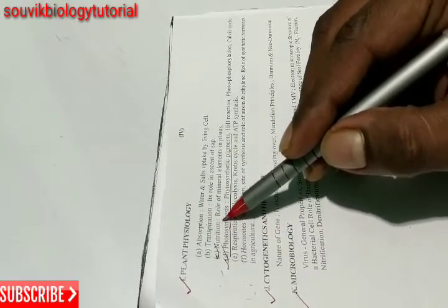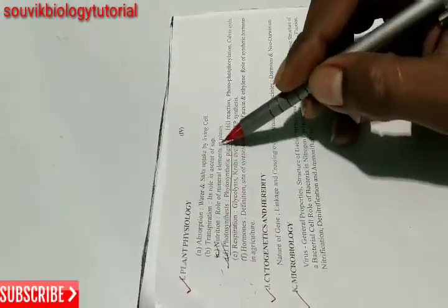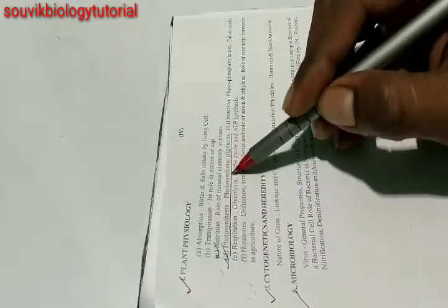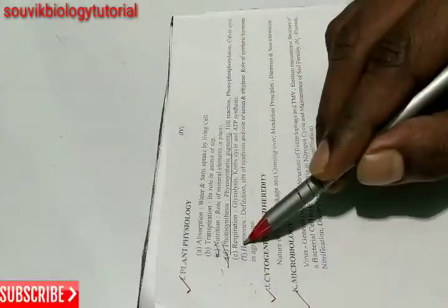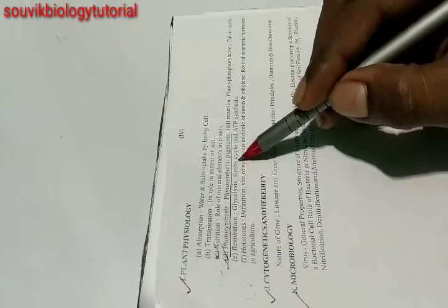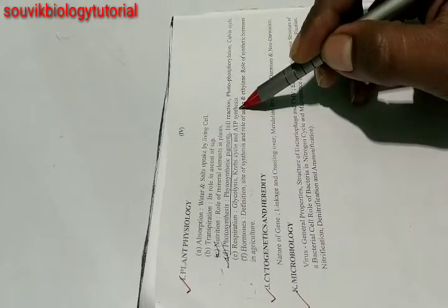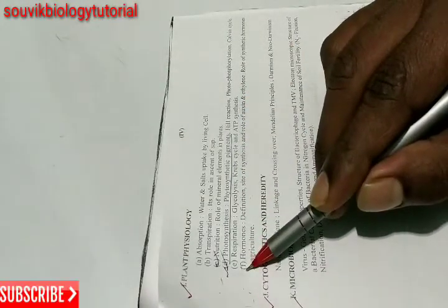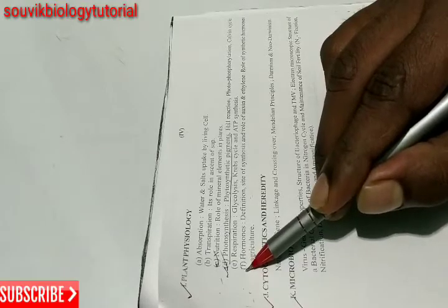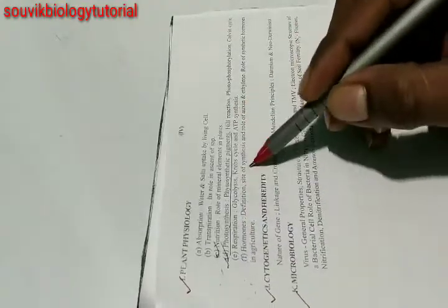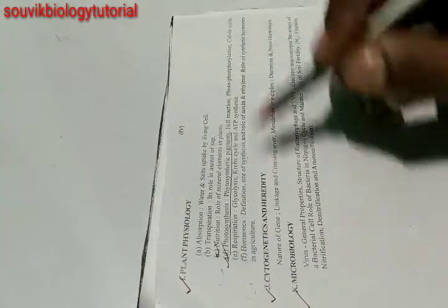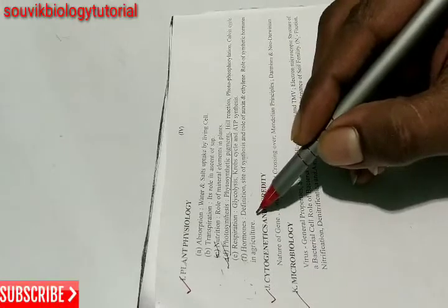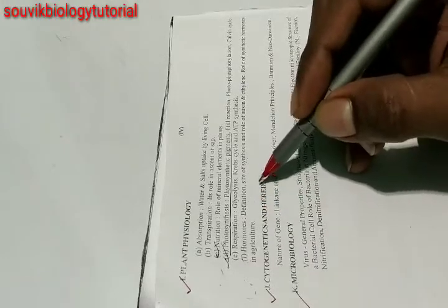From nutrition, study the role of mineral elements in plants. Photosynthesis: photosynthetic pigments, Hill reaction, photophosphorylation, Calvin cycle. Respiration: glycolysis, Krebs cycle, and ATP synthesis. Hormones: definition, site of synthesis, and role of auxin and ethylene, role of synthetic hormones in agriculture, and also study the role of gibberellin.